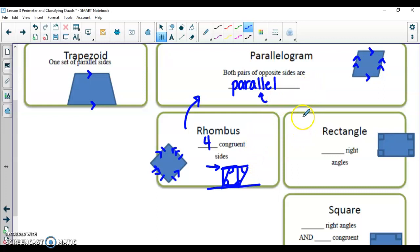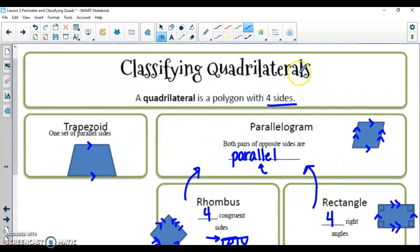Another specialized type of parallelogram that we're pretty familiar with is a rectangle. Rectangles get classified because they have four right angles. However, rectangles also have two sets of parallel sides because rectangles are also parallelograms. Keep in mind, a rectangle is not only a parallelogram, but a rectangle is also a type of quadrilateral.